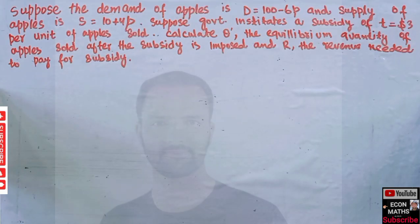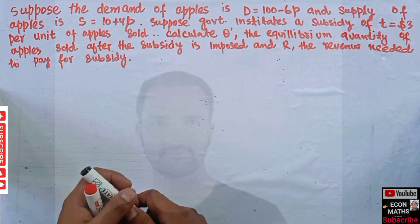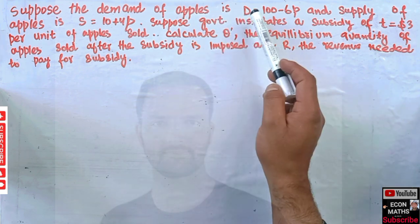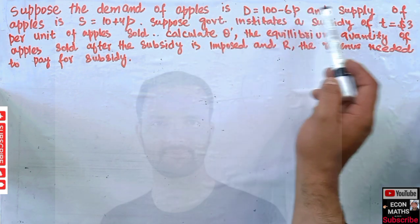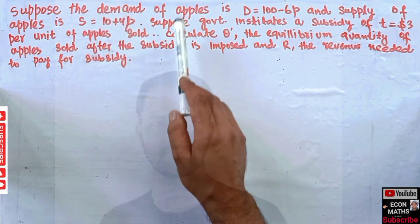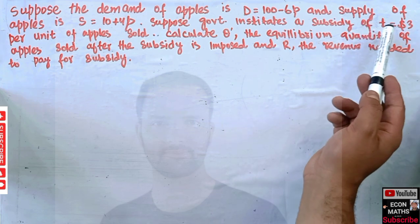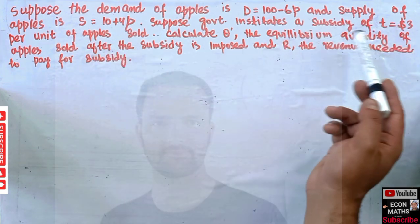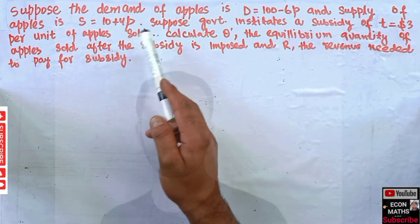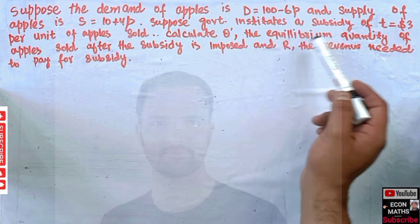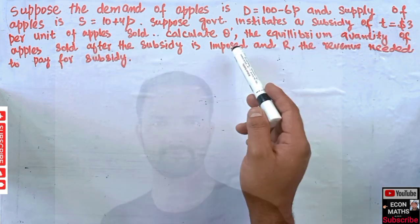In this video we will learn the impact of a per unit subsidy on the equilibrium quantity. The question is: suppose the demand of apples is given by D = 100 − 6P, and supply of apples is given by S = 10 + 4P. Suppose the government initiates a subsidy of T = $3 per unit of apples given to the producer. Calculate Q*, the equilibrium quantity of apples sold after the subsidy is imposed.